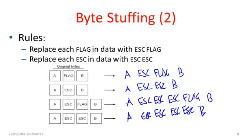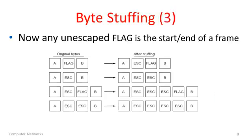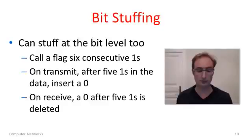And the receiver is going to apply the same rules in the other direction. Whenever it sees an escape in the data, it's going to take it out and replace it with the following character. If we use this scheme, it has the virtue that any unescaped flag is now the start or end of a frame. So we can use this method to quickly resynchronize if there's ever any error to find the start of frames. All we have to do is look for that unescaped flag, which doesn't exist here. You can see all of the flags are actually escaped, so they're not real.